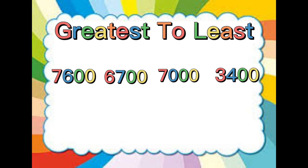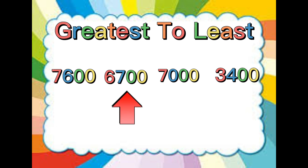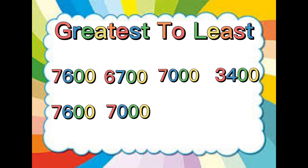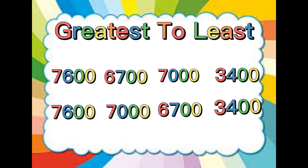Here is our last practice. Arrange these numbers from greatest to least. The numbers are 7,600, 6,700, 7,000, and 3,400. The greatest number in this set is 7,600. The next greatest to 7,600 is 7,000. The next greatest to 7,000 is 6,700. The least number in this set is 3,400.